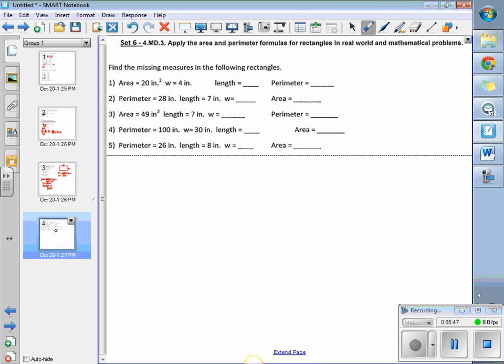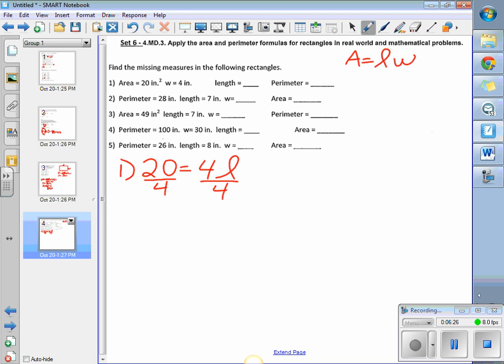This one's a little bit more challenging because we're given our area and we have to go backwards to find our length. If we're given that our area is 20, still using that area equals length times width. So 20 is equal to a width of 4 times our length. So we divide both sides by 4, and we'll figure out that our length is 5 inches.